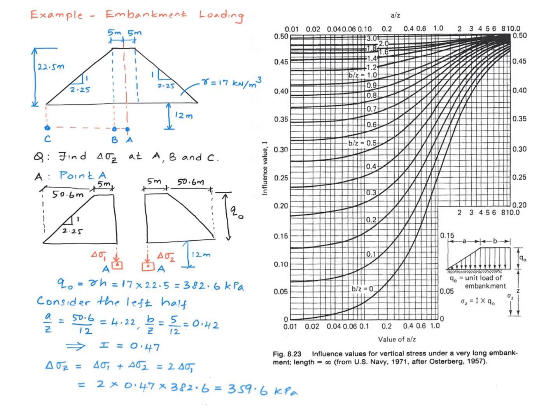Then I use my influence value on this equation right here. 0.47 multiplied by Q note. And then I multiply that by 2 in order to get the total vertical stress change at point A. And it works out to be 359.6 kilopascals.